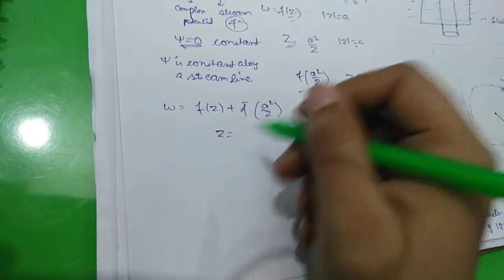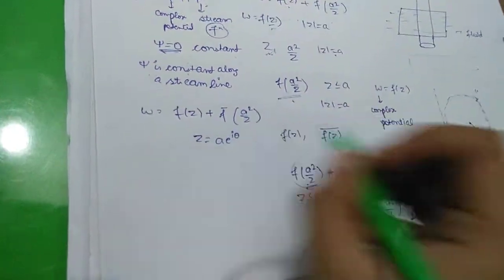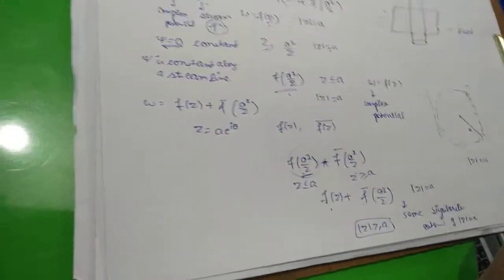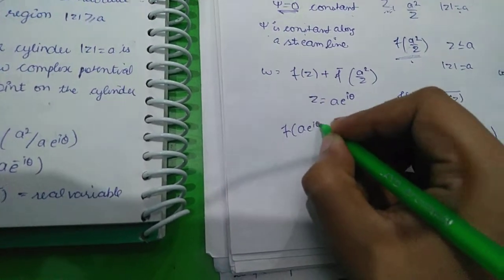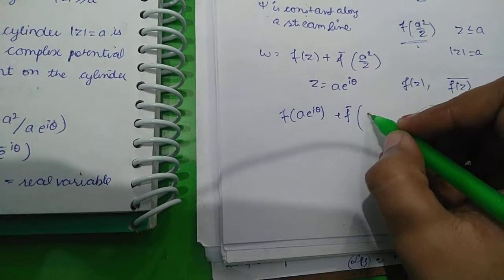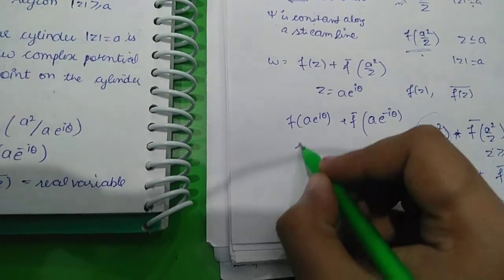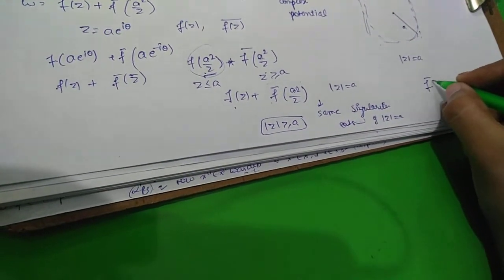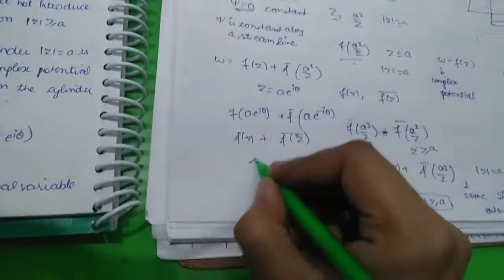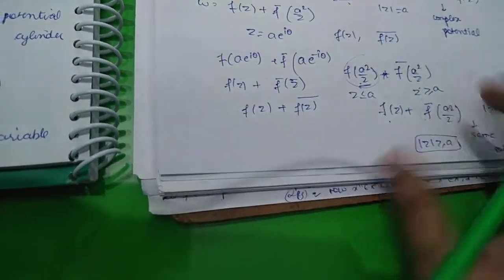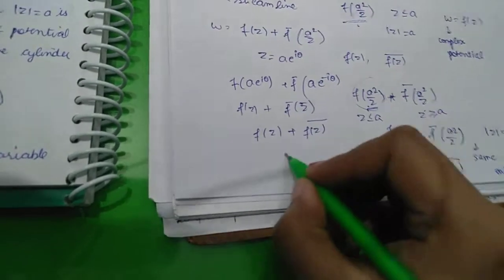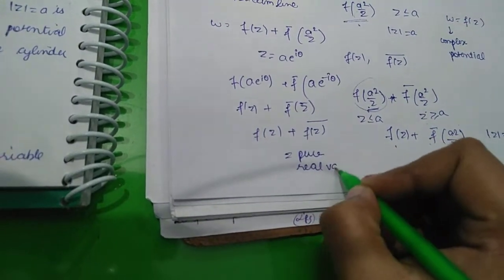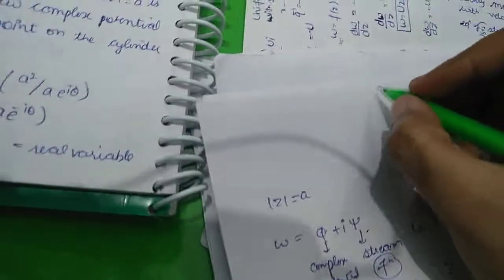We know that w = F(z) + f̄(a²/z). On the circle, z = ae^(iθ), so we substitute: F(ae^(iθ)) + f̄(a²/(ae^(iθ))) = F(z) + f̄(ae^(-iθ)) = F(z) + f̄(z̄). We know that f̄(z̄) = conjugate of F(z). So w = F(z) + conjugate of F(z), which is a purely real number, meaning the imaginary part ψ = 0, which is constant.